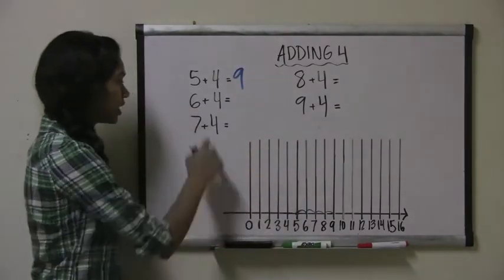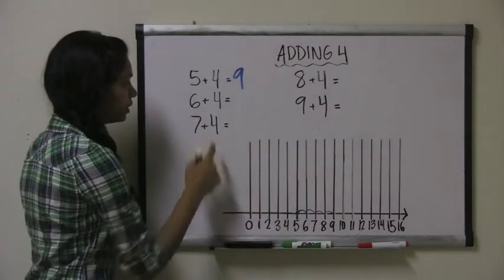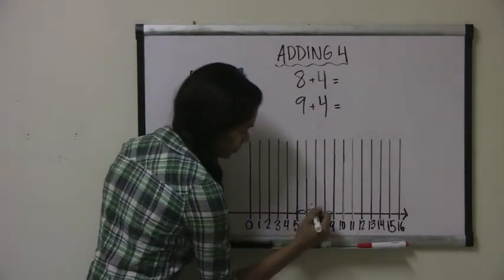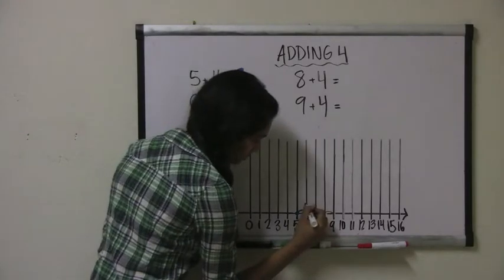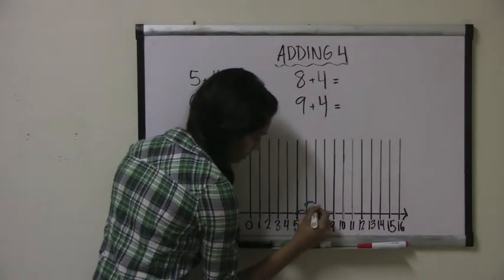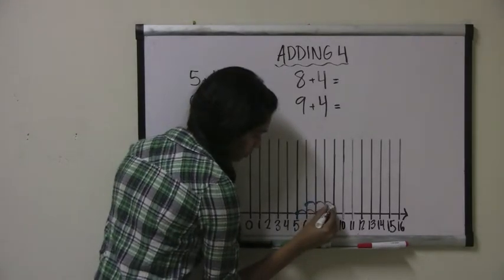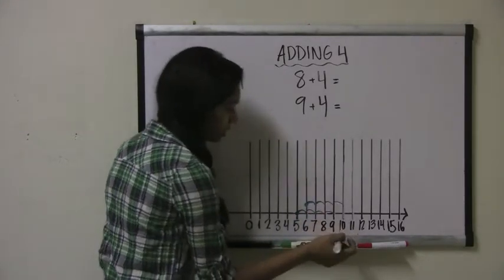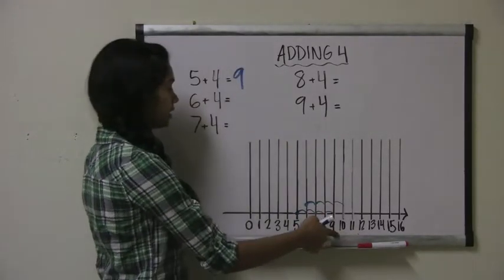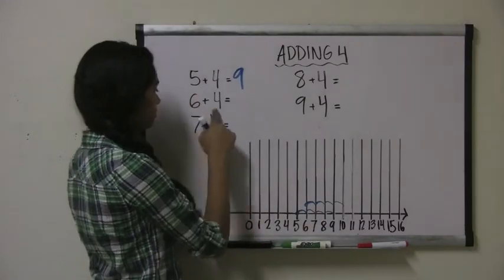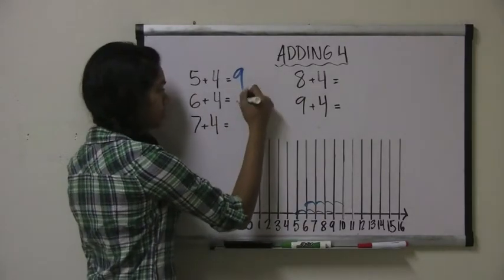Let's try 6 plus 4. This time we start with the number 6 and jump 4 spots: 1, 2, 3, 4. We land on 10, so 6 plus 4 equals 10.